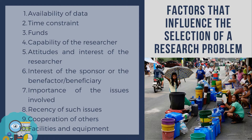Factors that influence the selection of a research problem include: the availability of data, time constraint, funds, the capability of the researcher, attitudes and interest of the researcher, interest of the sponsor or the beneficiary, importance of the issues involved, recency of such issues, cooperation of others, and facilities and equipment.